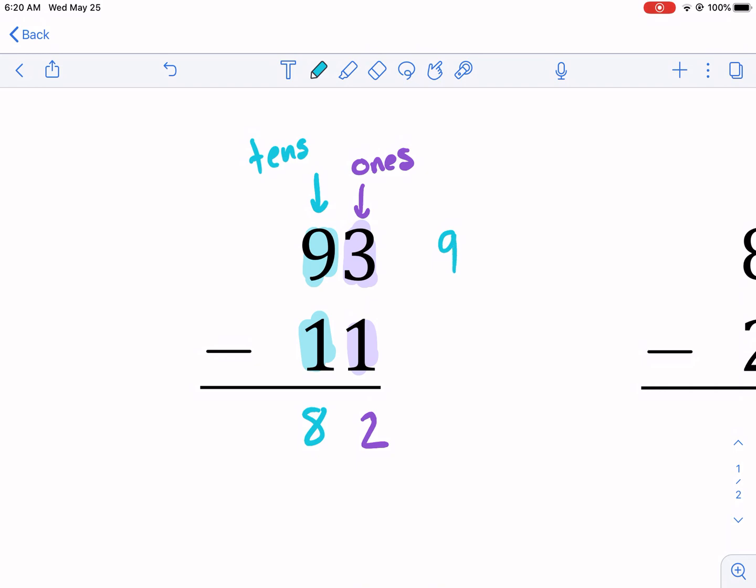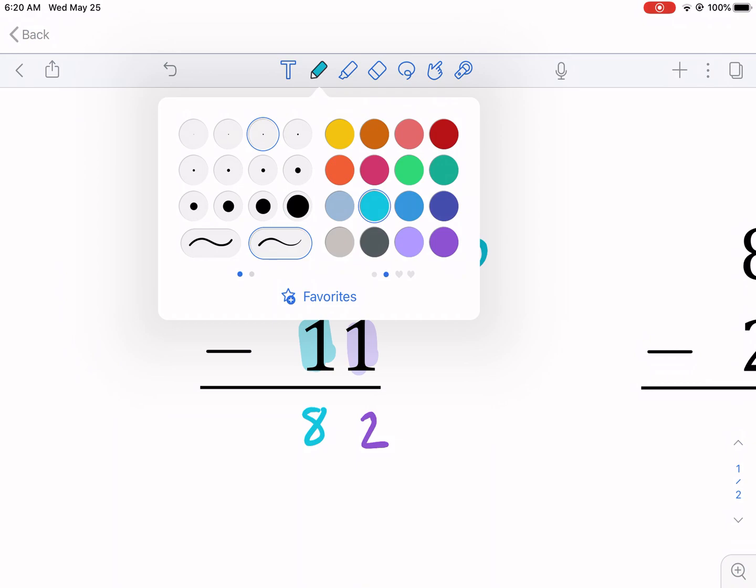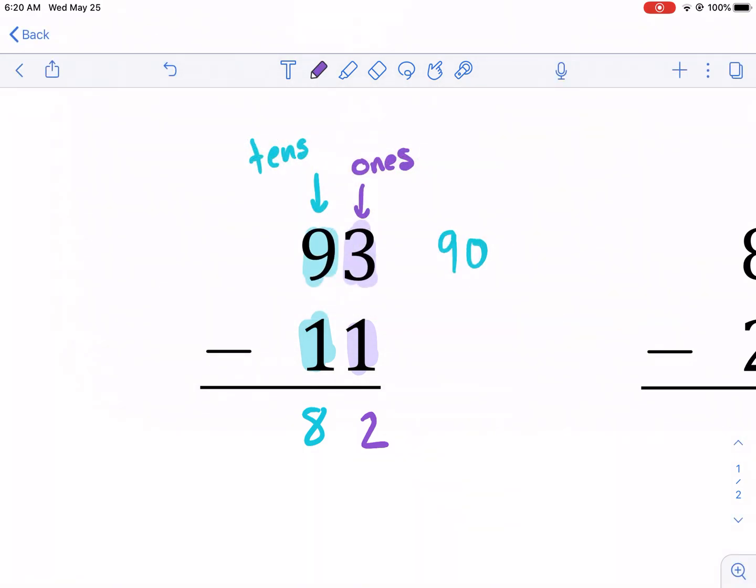But why is it 82? So this number 93 is the same thing as 90 plus 3. Obviously, that's a ones place. And then tens place, that 9 isn't just the number 9. It represents 90. So that's the tens place.